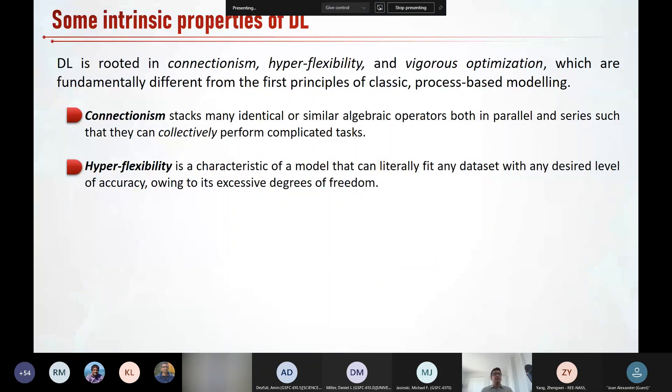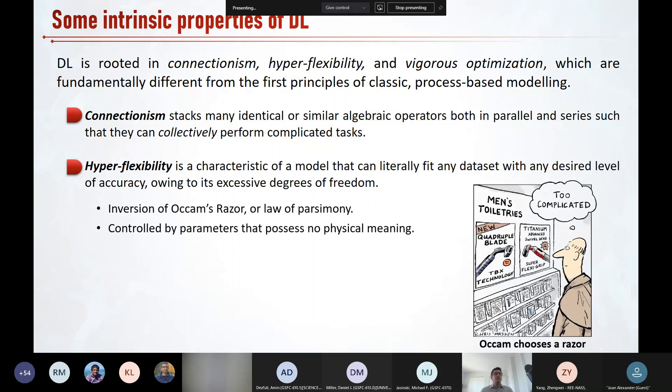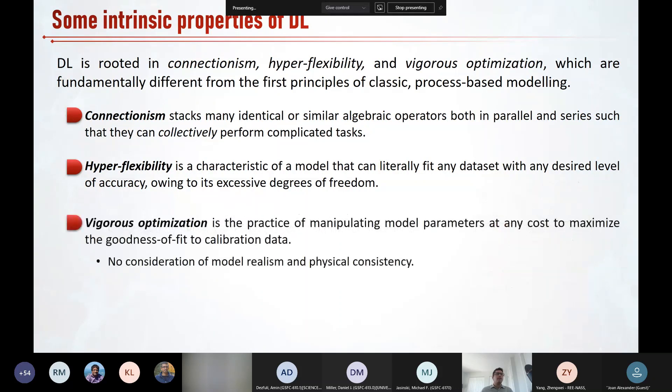What is hyper flexibility? It's a characteristic of a model that can literally fit any data set with any desired level of accuracy owing to its excessive degree of freedom. This can be viewed as the inversion of Occam's razor or law of parsimony, which has always been a guiding principle in scientific discovery and model building. Also, a hyper flexible model that neural networks are controlled by parameters that possess no physical meaning. Unlike process based models that have relatively fewer degrees of freedom controlled by parameters that possess some physical meaning.